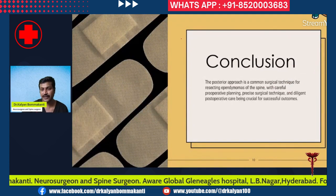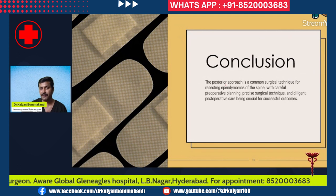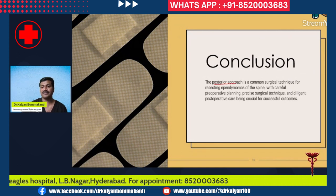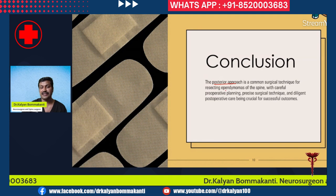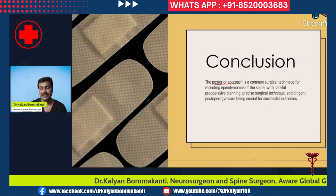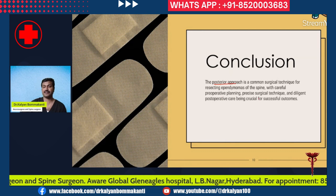In conclusion, among all approaches for spinal cord ependymoma, the posterior approach is the most common surgical technique. With careful pre-operative planning, precise surgical technique, and diligent post-operative care, very good outcomes can be achieved — success rates of 70 to 80 percent, and in smaller cases even up to 90 percent.